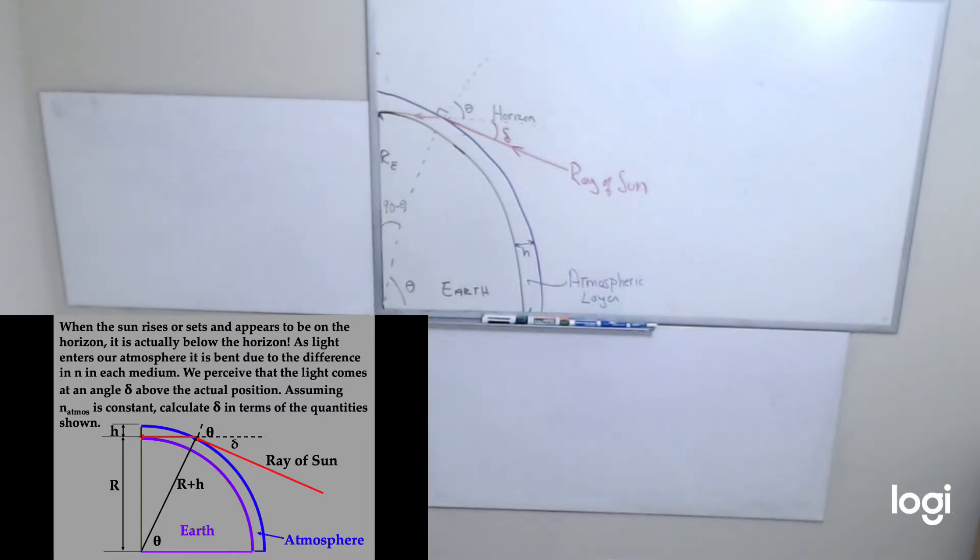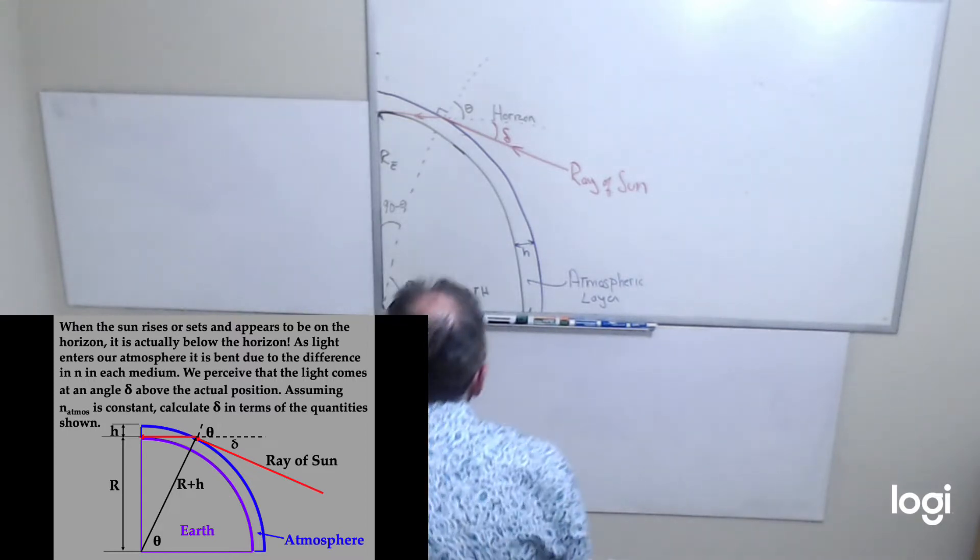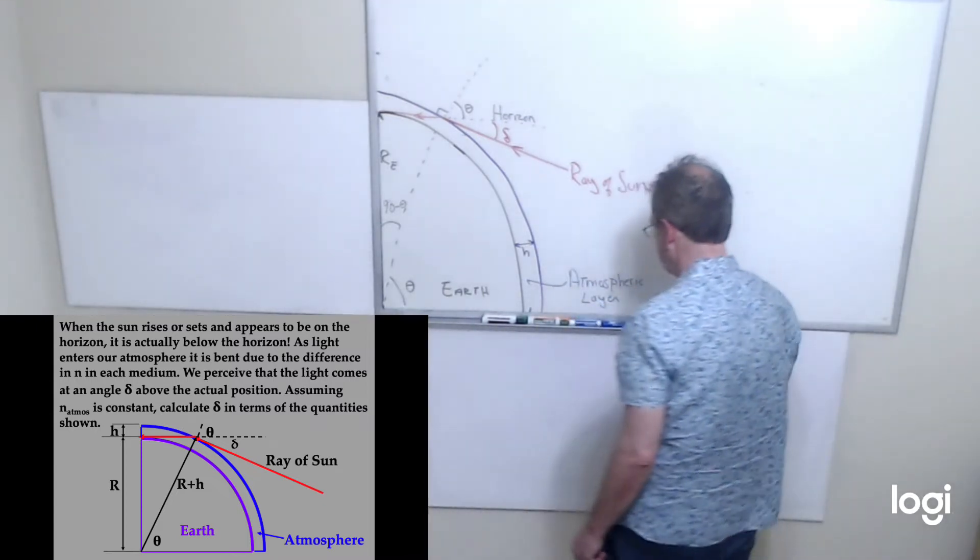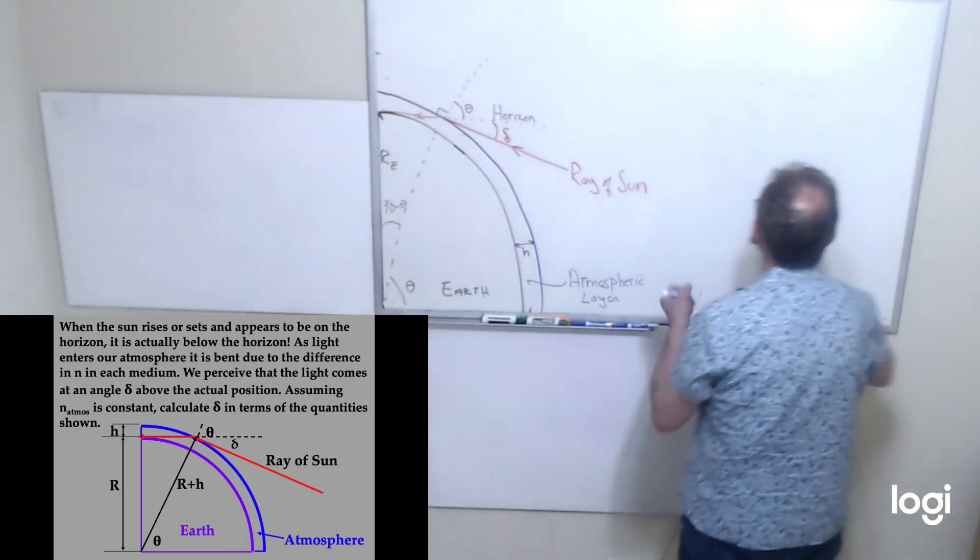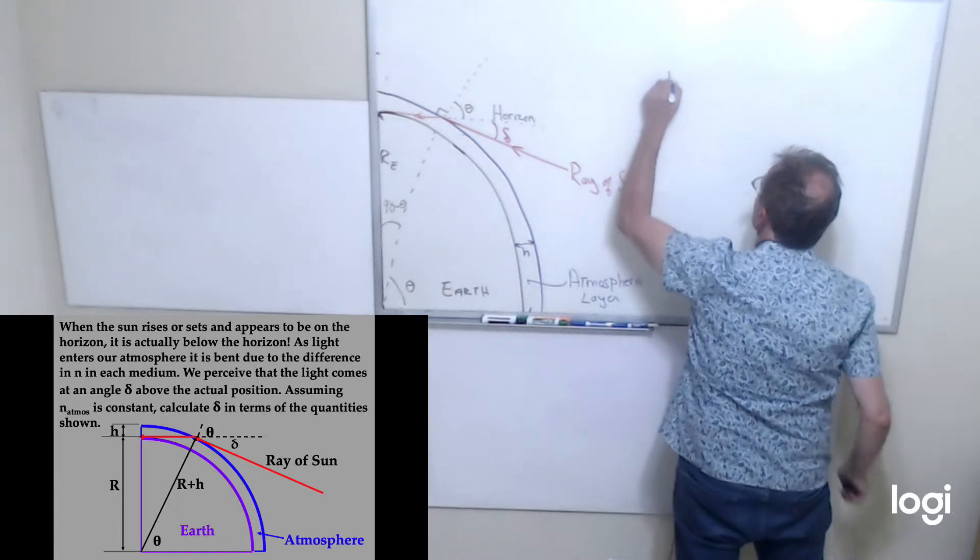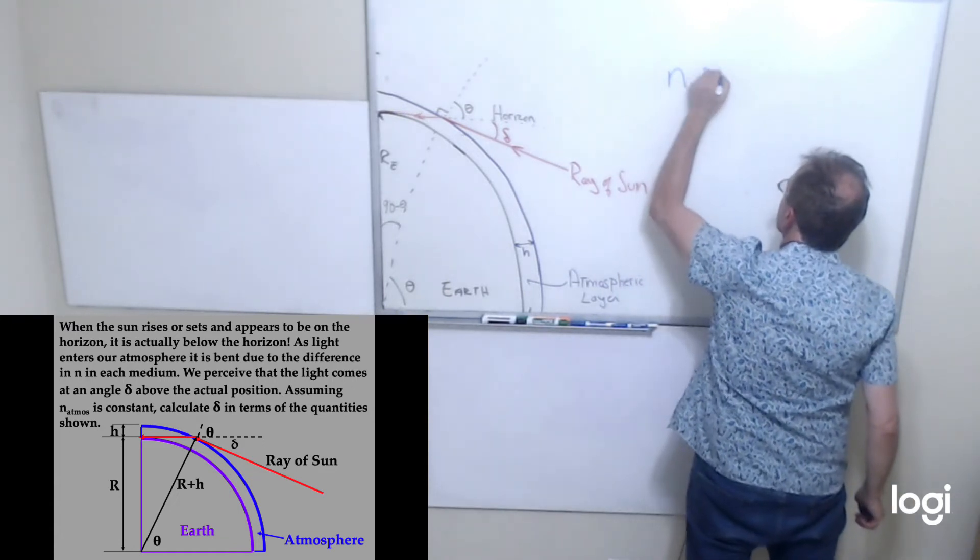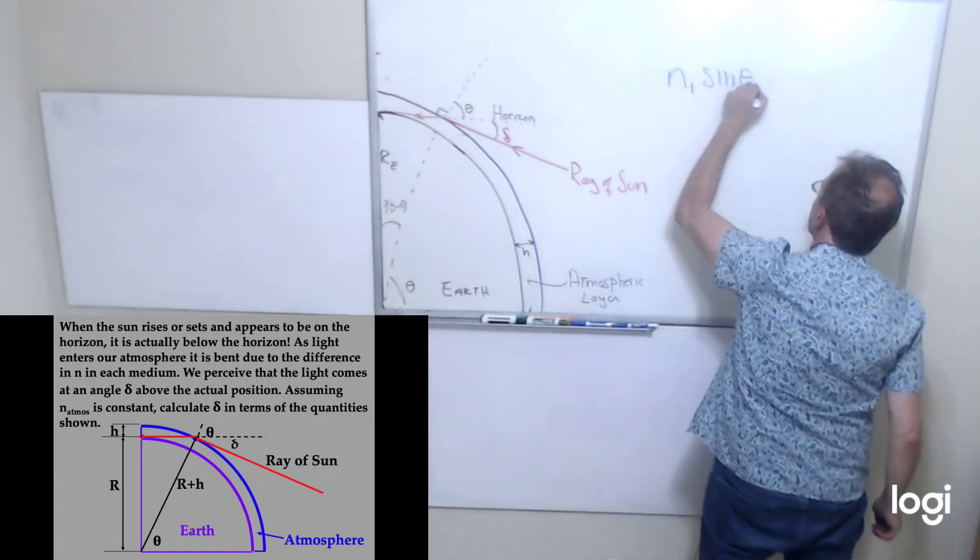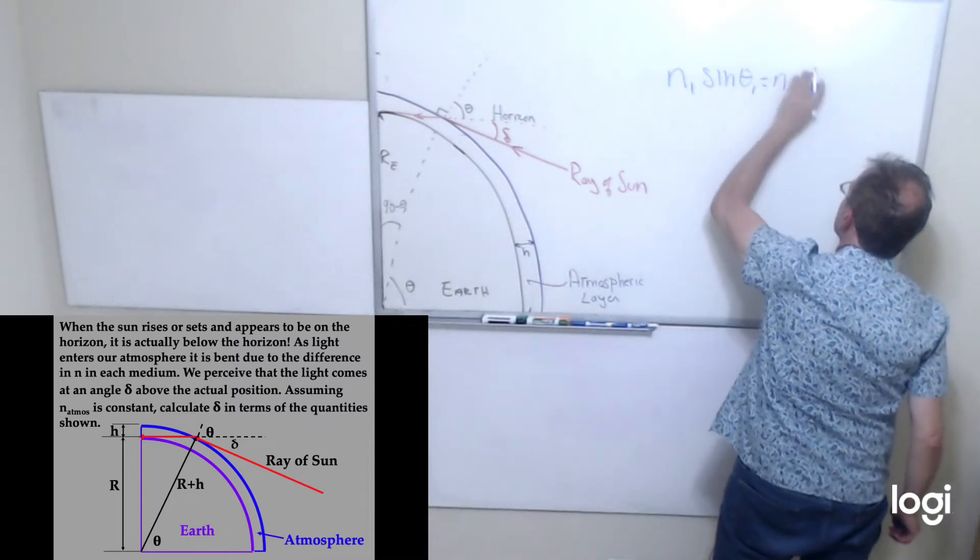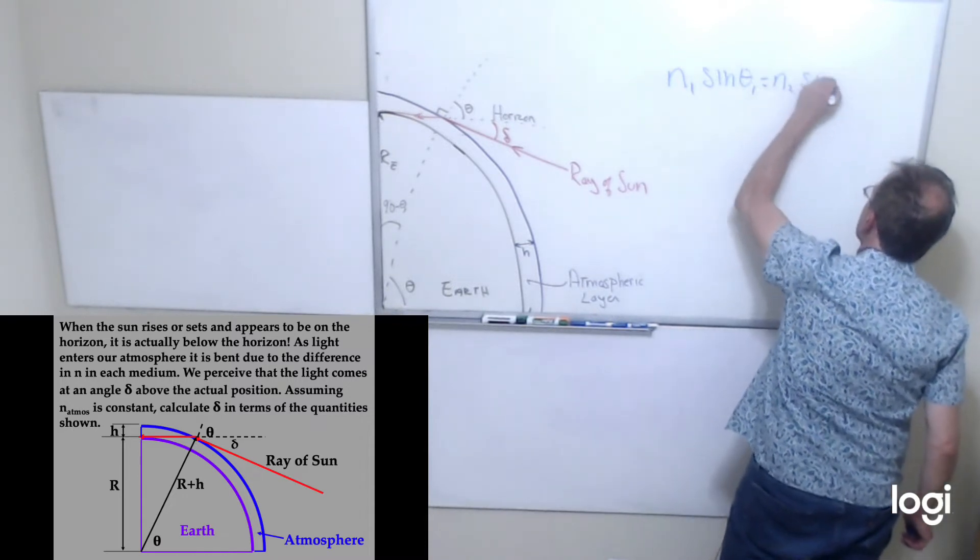This is an application of Snell's Law. And again, Snell's Law can be written in the following way: n1 sin(θ1) equals n2 sin(θ2).